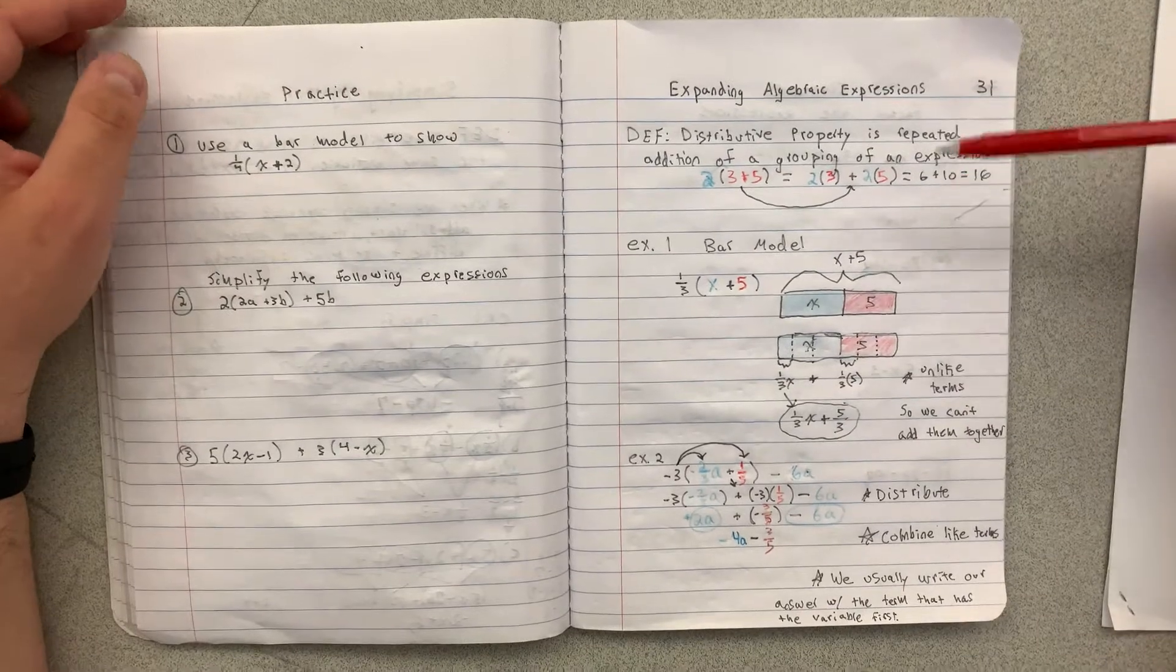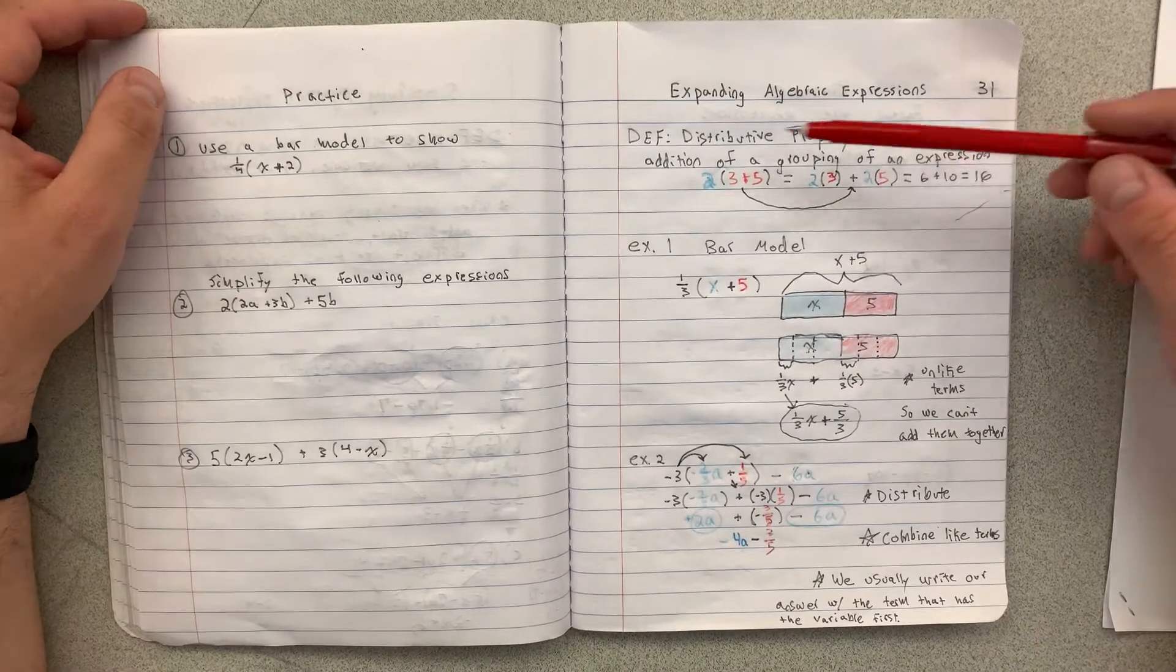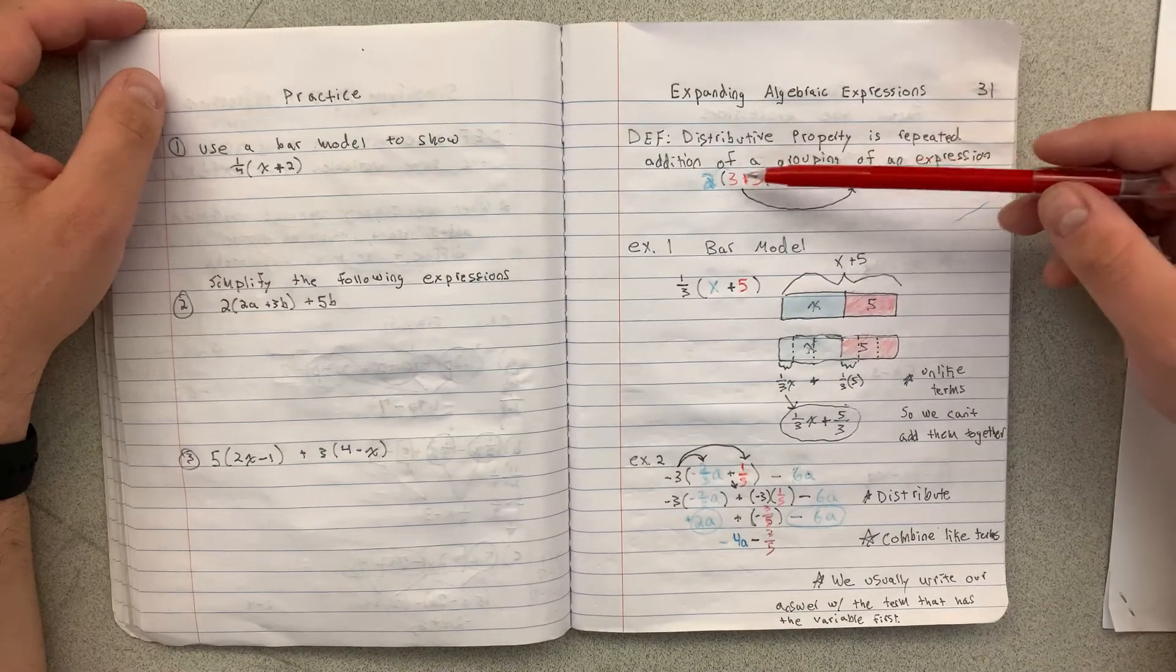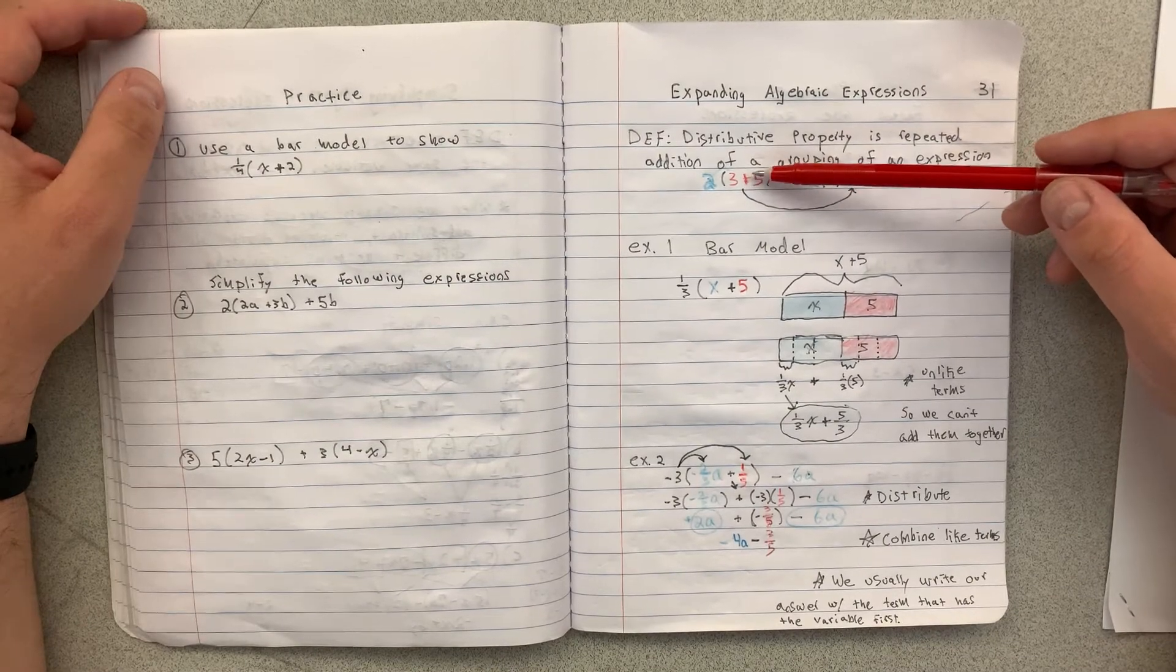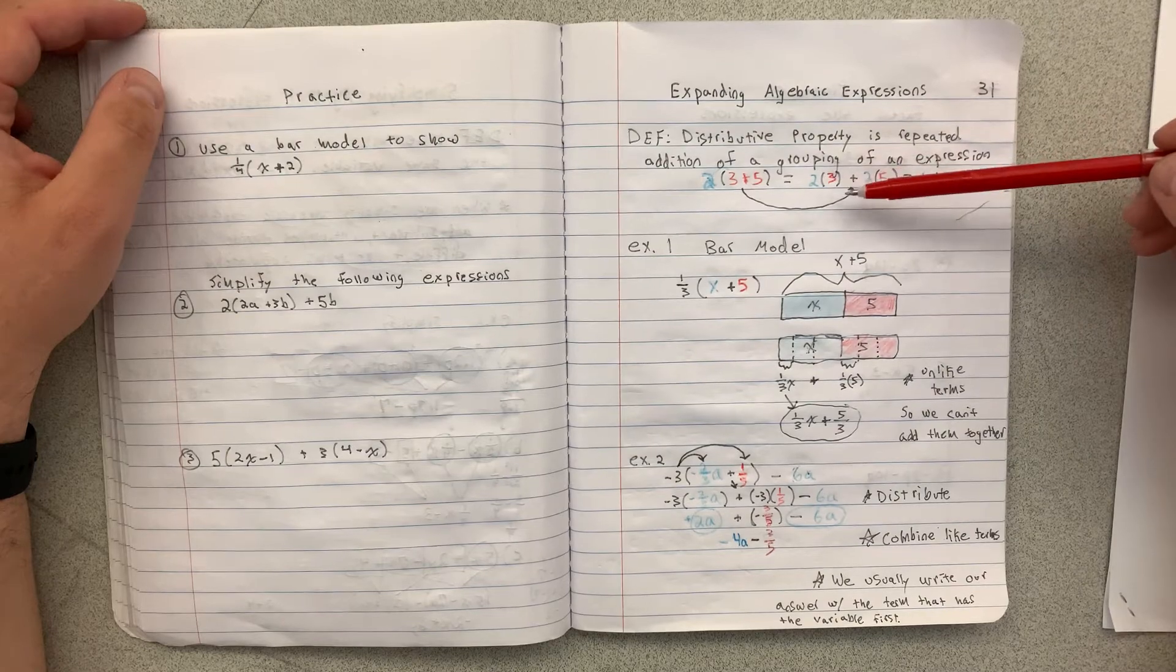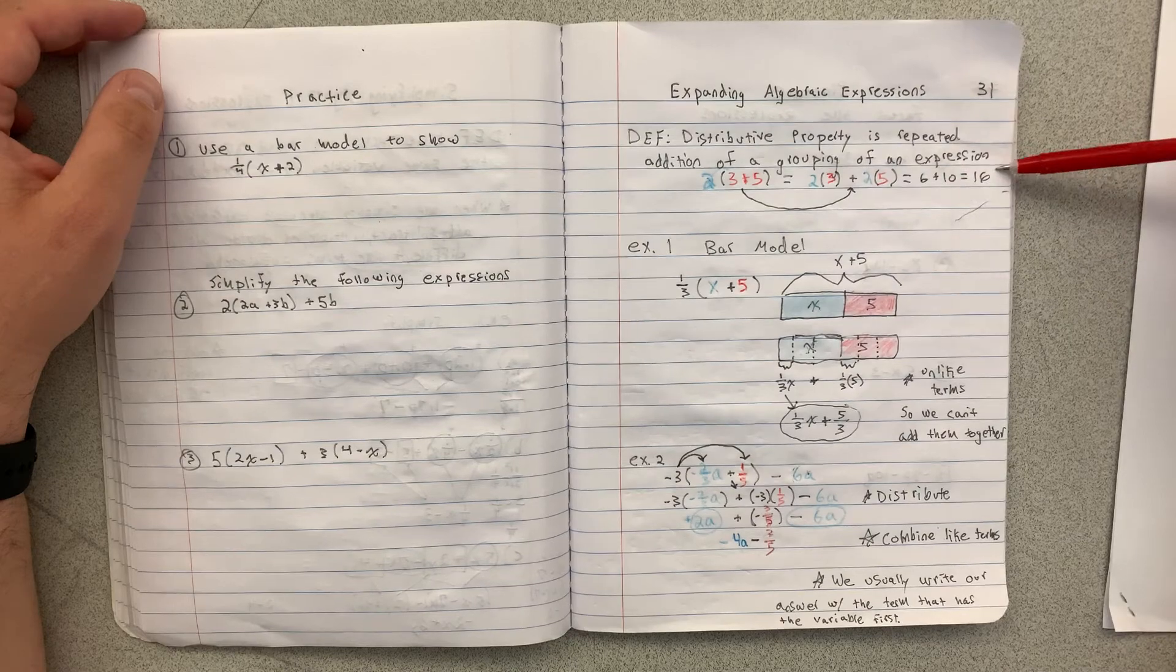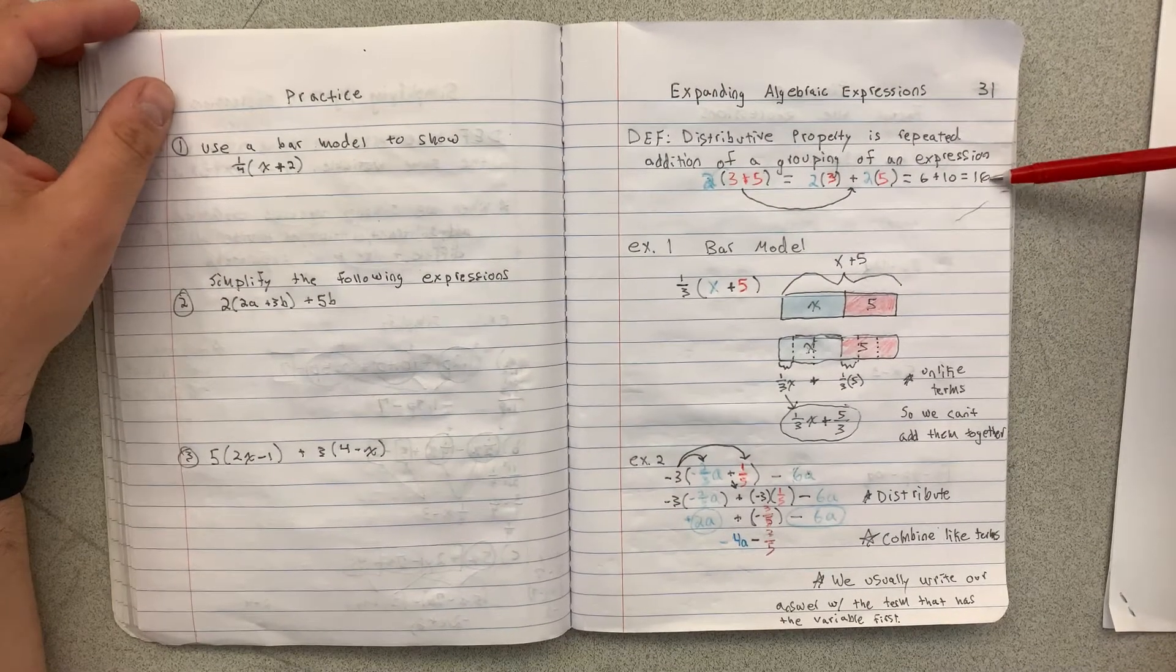What we have here is an example of the distributive property. So if you did 2 times 3 plus 5, the order of operations says that we would add 3 and 5 together to get 8. And 2 times 8 would be 16. You can also multiply each of those by 2 and still get 16. So it's another way to represent why the distributive property works.